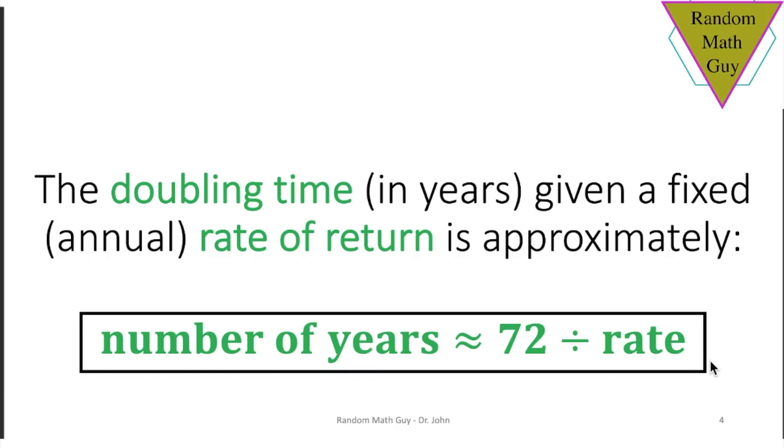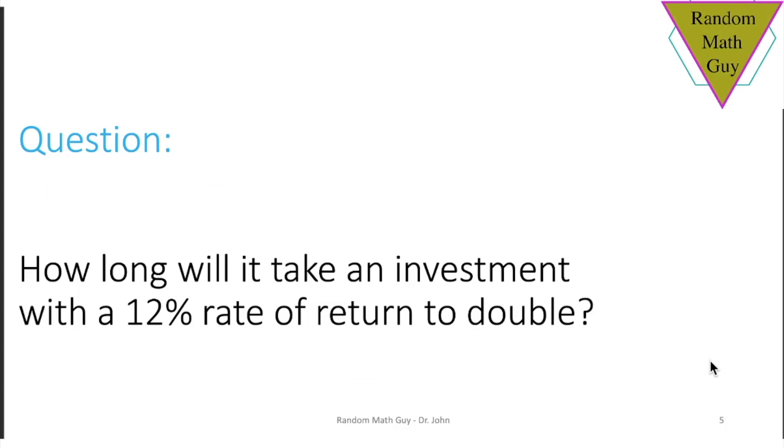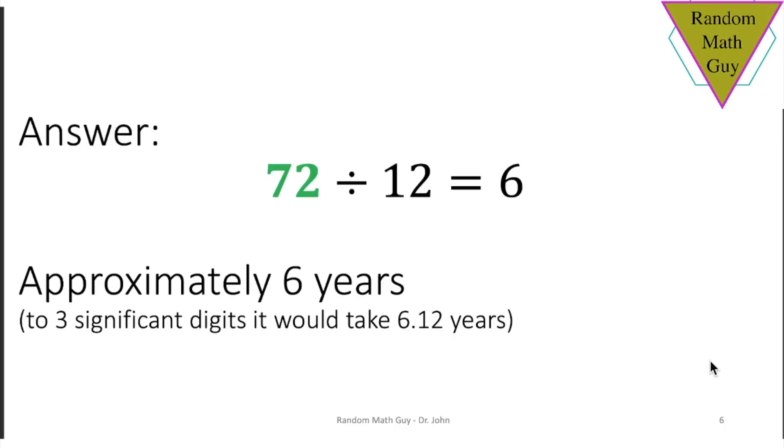Just to review, to find out how much time it takes to double your money if you know the rate of return, and we're talking compound interest, you take 72 and divide by the rate. Let's practice this one time with a 12% rate of return, just to remind you what we did in the last video. If you have a 12% rate of return, you take 72 and divide by 12 to get 6 years. The answer exactly is closer to 6.12 years.